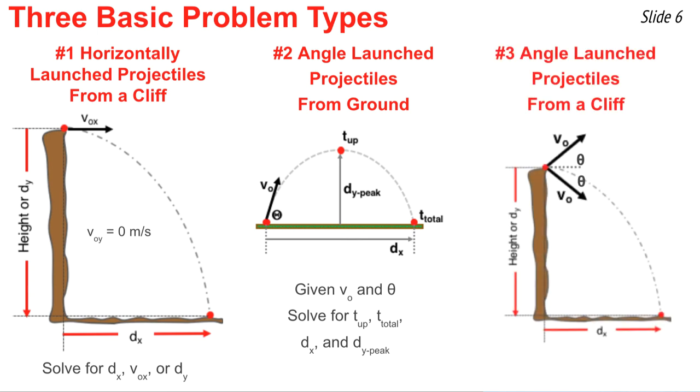And the third type of projectile problem is what I call an angled launch from an elevated position. It may be launched upward or downward. Either way, you're typically given the original velocity and the angle, and you have to calculate any number of things. These are for sure the hardest type of projectile problems.